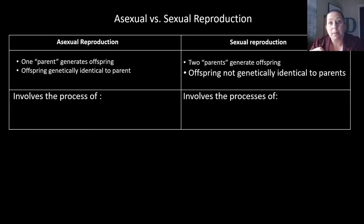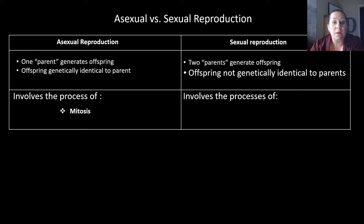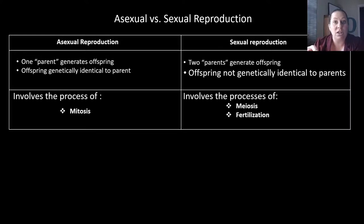Sexual reproduction is when you have two parents who generate an offspring, but the offspring is not genetically identical to the parents — they are going to be unique. In asexual reproduction the process is mitosis, and in sexual reproduction it's going to be meiosis and fertilization, which we'll talk more about in another video.